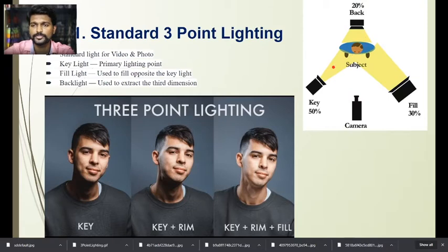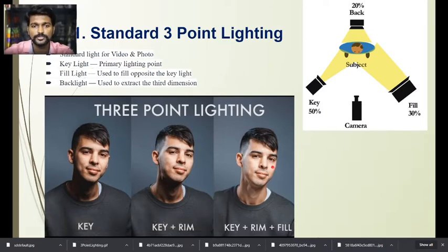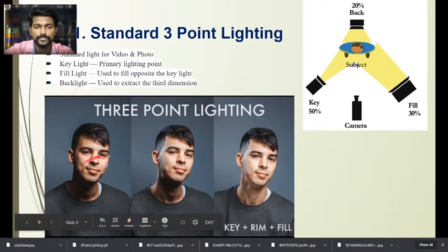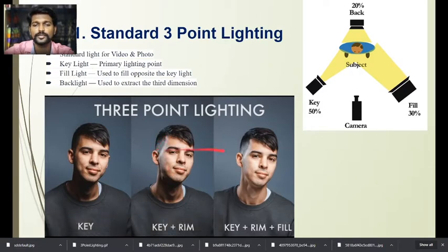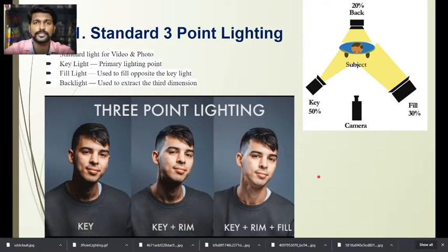A good example: the key light is about 50% output and the fill light is about 30%, filling the opposite side from the key light. This is the standard setup showing key light, fill light, and backlight positions. The rim light highlights the outline — you can see it falling on the hair. This image shows key light, rim light, and fill light together. This standard lighting technique is used for both photography and videography.